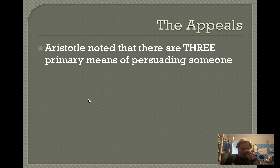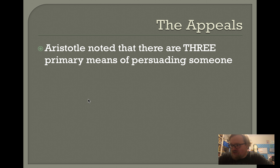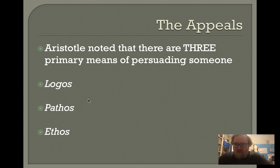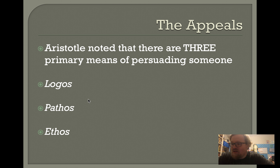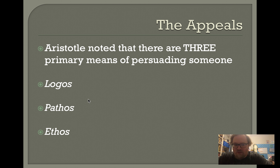Aristotle also laid out what he considered to be the three basic appeals for engaging in persuasion, which also relate to communication in a modern sense. The first one is logos, the second one pathos, and the third one is ethos. Some of these may look like English words — logos may look like logic, pathos has a root in sympathy and pathetic, and ethos will make most of you think of ethics. Because they are Greek words, their meanings translate into English with a lot more breadth and appeal.